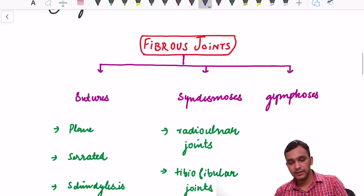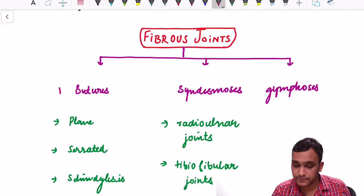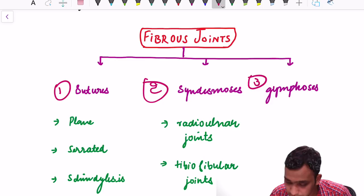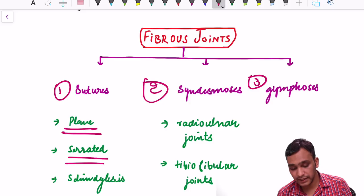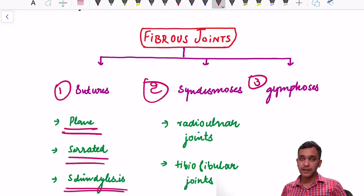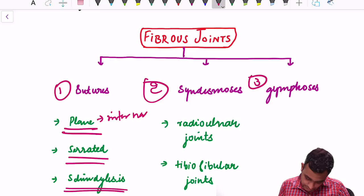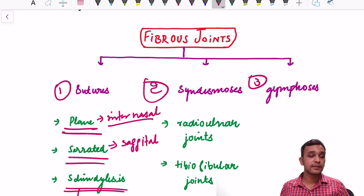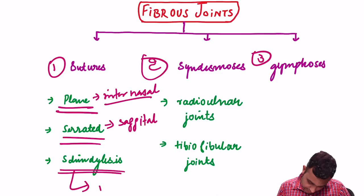In fibrous joints, there are three types: sutures, syndesmosis, and gomphosis. Sutures are further classified as plain, serrated, and schindylesis. Plain sutures — example: internasal suture. Serrated sutures — example: sagittal suture. Schindylesis is a joint in which a ridge of one bone fits into the groove of another; the example is the joint between the vomer and sphenoid bone.